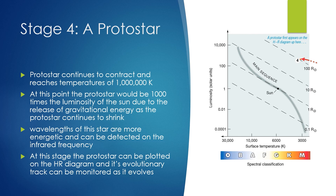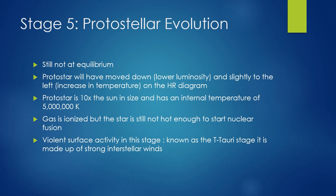The protostar will continue to contract until it reaches a temperature of one million Kelvin. Protons and electrons have been pulled from their atoms and whip around forming the star. Internal temperatures will still not have reached fusion, but at this point the protostar would be 1,000 times the luminosity of the sun due to the release of gravitational energy. Material from the nebula continues to rain down, allowing it to gain mass. The wavelengths of the star are more energetic and can be detected in the infrared. At this stage, the protostar can also be plotted on the HR diagram and its evolutionary track monitored. The protostar has not yet reached equilibrium, so it will move down and to the left slightly on the HR diagram.